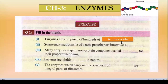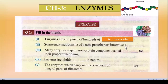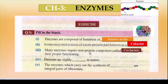Enzymes are composed of hundreds of amino acids, jo join hokar banate hain proteins. Blank 2: Some enzymes consist of a non-protein part that is known as a cofactor. Blank 3: Many enzymes require a non-protein component called dash for their proper functioning — dono taraf non-protein component aur part hai, that is cofactor.